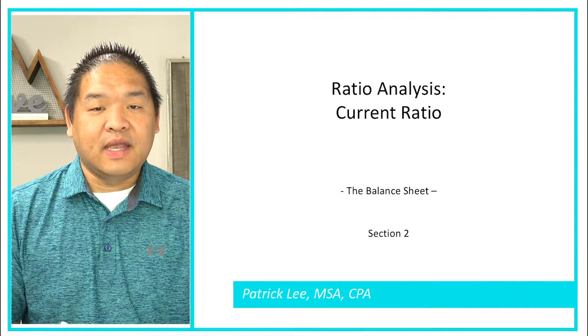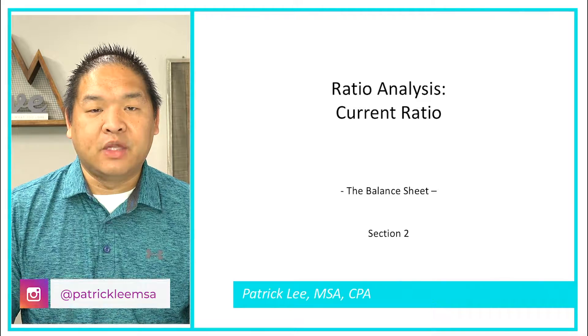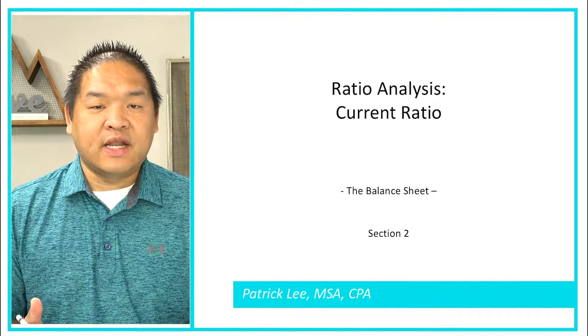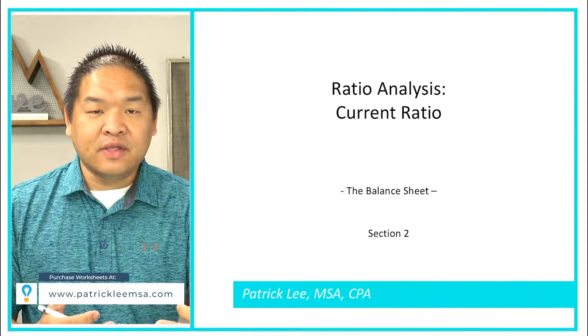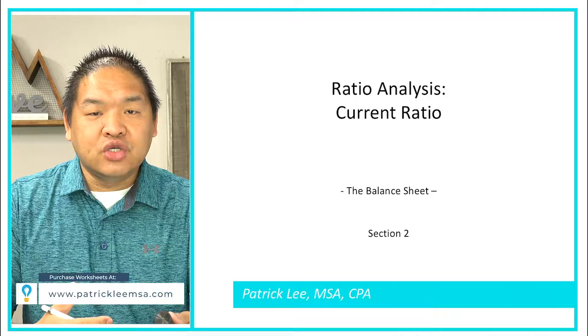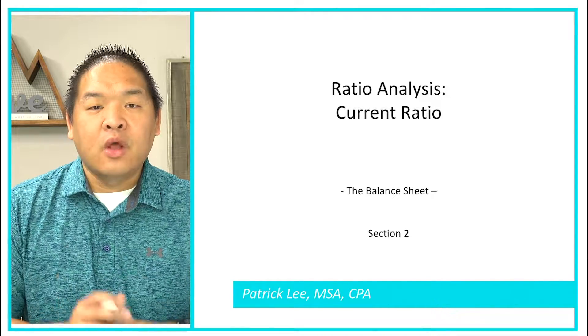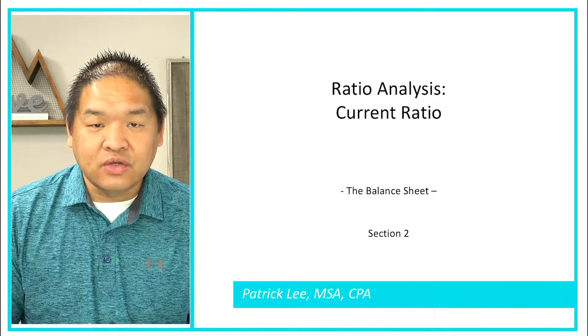Alright, in this lesson we're going to be looking at ratio analysis. The specific ratio we're covering is called the current ratio, and this will help us understand whether or not we can pay our current liabilities, which are liabilities due within one year or the operating cycle of the business, whichever is longer, with the available current assets we have.